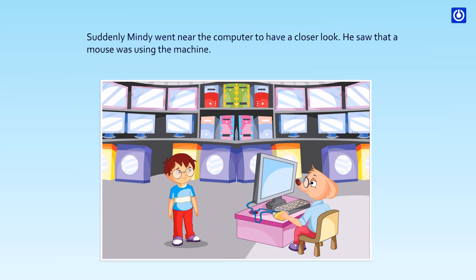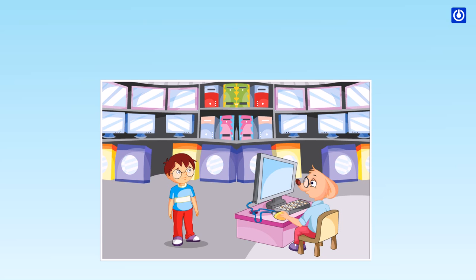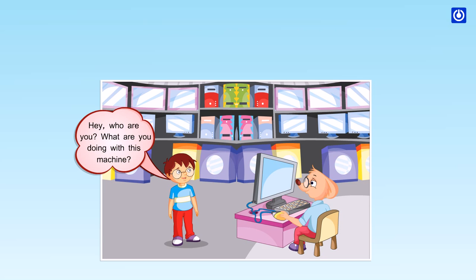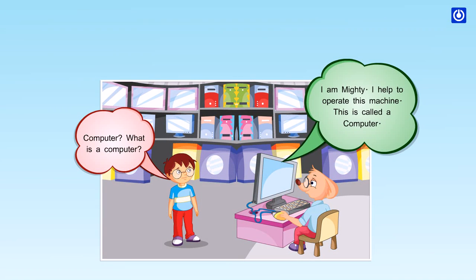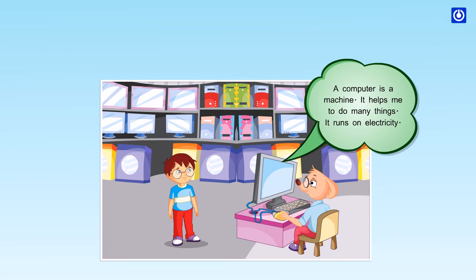He saw that a mouse was using the machine. Hey, who are you? What are you doing with this machine? I am Mighty. I help to operate this machine. This is called a computer. What is a computer? A computer is a machine. It helps me to do many things. It runs on electricity.